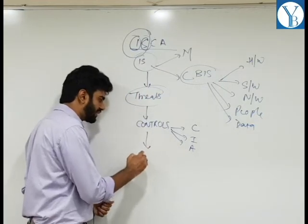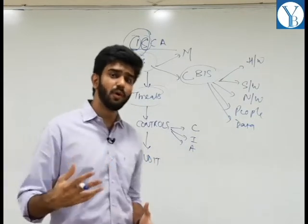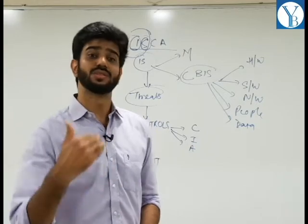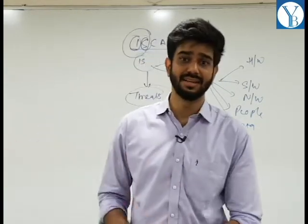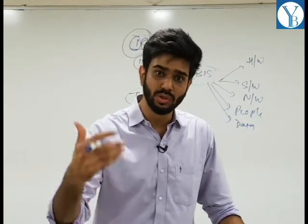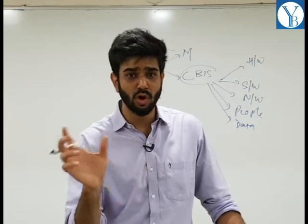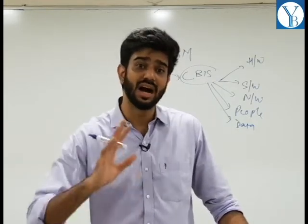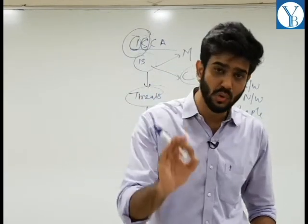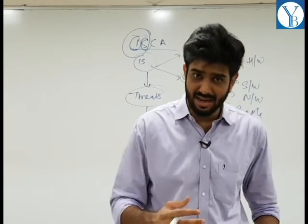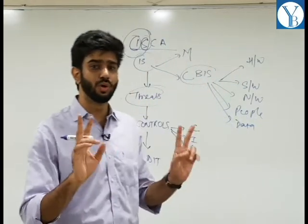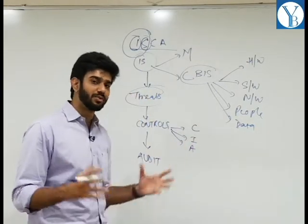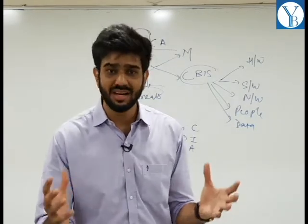After controls, the next point is Audit — and that is what we CA students do. In audit, we will check whether the controls that have been put in place are adequate or not. Adequate means are the controls at the level they should be? For example, if confidential data is in my computer room, to secure that room I'll use a biometric lock, not a normal lock, because biometric provides the highest level of security. So the auditor checks two things: adequacy and operating effectiveness of controls.